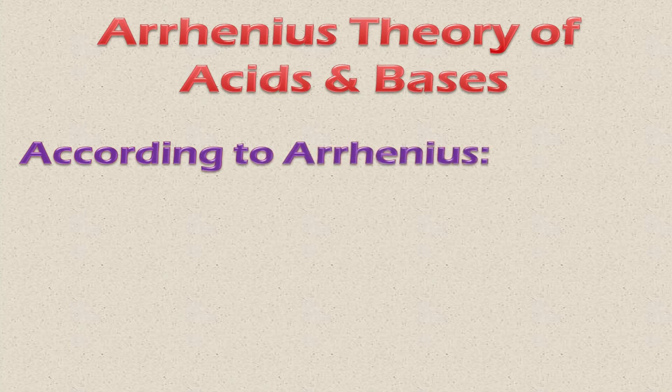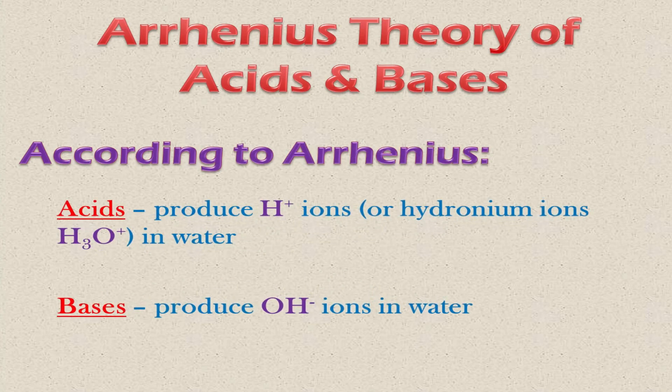According to Arrhenius, acids are those substances which can produce hydrogen ions in water. Whenever any substance is dissolved in water and produces hydrogen ions, it is an acid according to Arrhenius. The definition of a base according to Arrhenius: substances which produce hydroxyl ions or OH⁻ ions in water are called bases. If you dissolve any substance in water and it gives OH⁻ ions, that substance is a base.